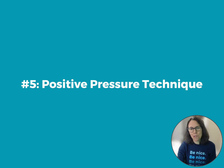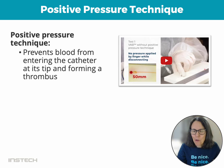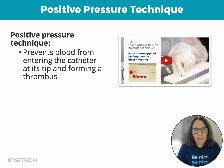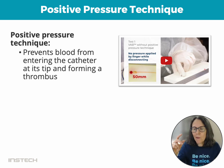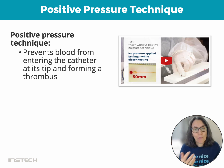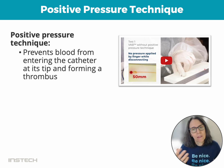Our last factor that influences patency duration is the positive pressure technique. It's a very simple thing you can do when you are disconnecting the syringe from your VAB port after locking the catheter. As you remove the syringe from the port, all you have to do is apply some positive pressure on the plunger. This prevents blood from entering the catheter at its tip and forming a blood clot, giving you a much better chance of a longer patency duration.